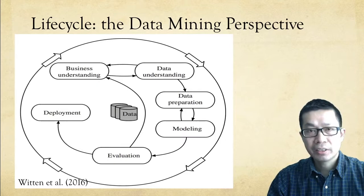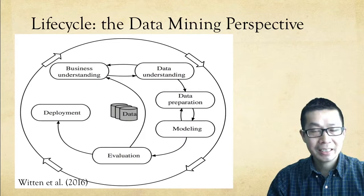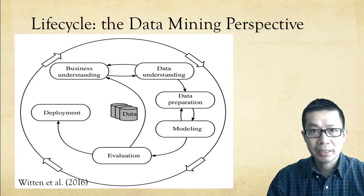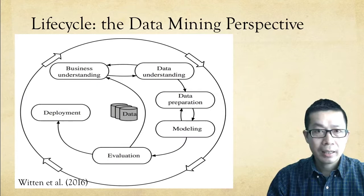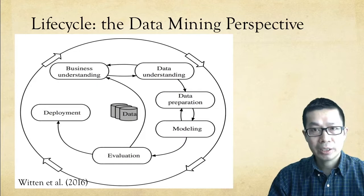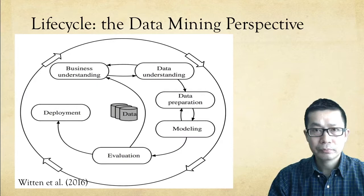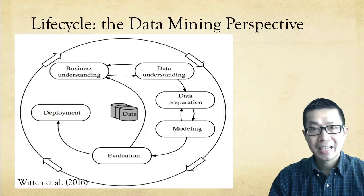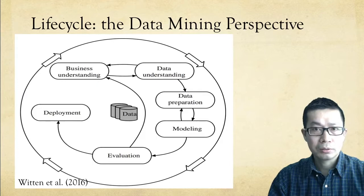It starts with proper interplay between understanding the business and domain problem versus understanding of data. As a team, you need to make sure that you can articulate the problem statement and the objectives you set out to achieve. Given the data already available or what you can potentially access, you should examine what is in the data and whether you have relevant variables and sufficient data instances to address the identified problem. The understanding of the business problem will also fit into the process and metrics for final evaluation of results, guiding data preparation, transformation, and modeling so that they are aligned with the objectives and the problem you set out to resolve.